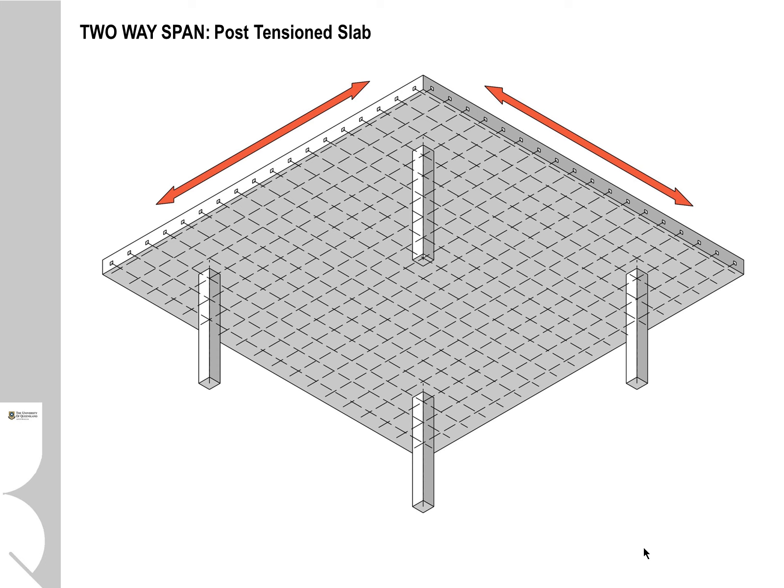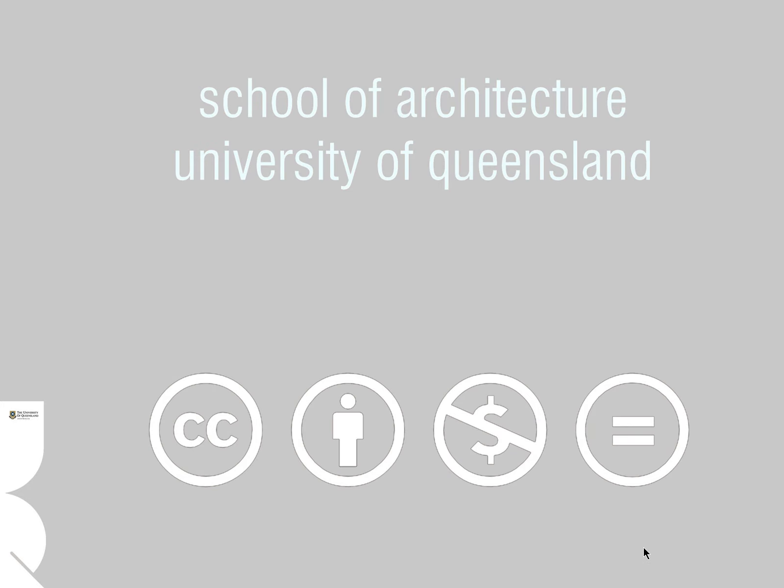We also have post-tensioning in the slab, which uses cables run through a sheath built into the slab, which at a certain point during the curing process are pulled tight or tightened with a mechanical jack. This stressing of the slab gives it a lot more strength, so you can achieve a better strength-to-depth ratio of the slab itself. That ends this section where we're looking at suspended slab construction types. Thanks for listening and hopefully we'll have your attention for some future videos as well.